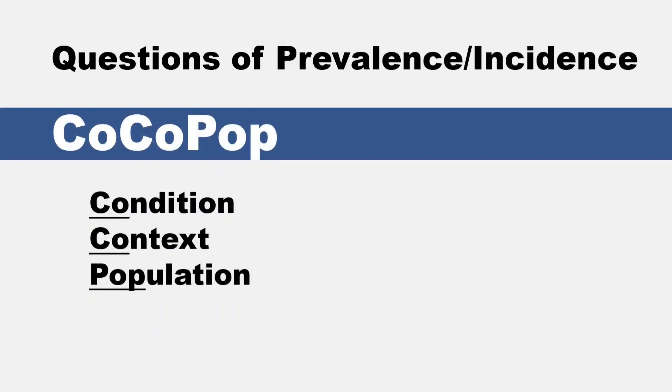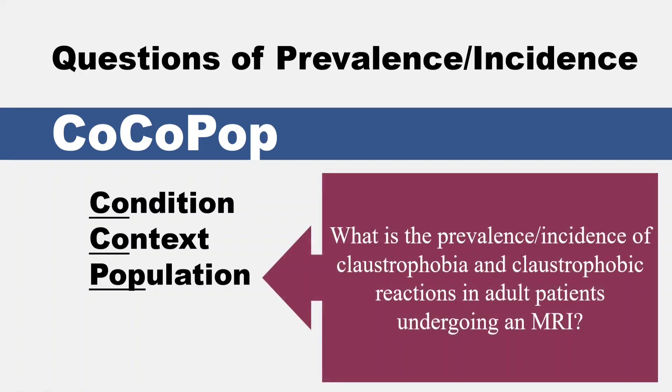The next question development framework is best for questions of prevalence or incidence, and it's one of my favorites because it sounds like a sweet cereal. COCO POP stands for condition, context, and population. A sample topic might look like this: 'What is the prevalence/incidence of claustrophobia and claustrophobic reactions in adult patients undergoing an MRI?'